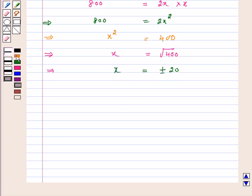Now, length cannot be negative, so we reject the minus sign. Therefore, the breadth of the rectangle is 20 meters.